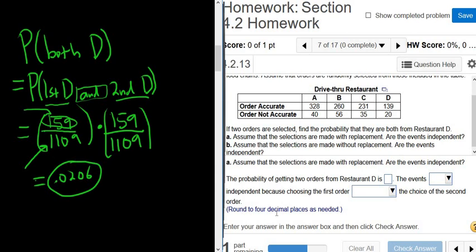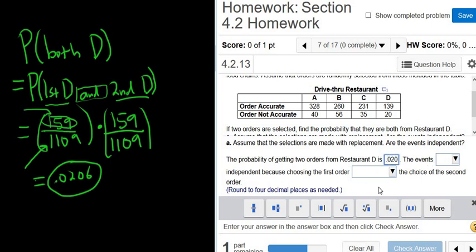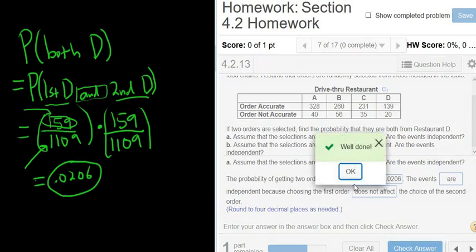All right, let's read what it wants here. Here, the probability of getting two orders from restaurant D is, okay, that's where it wants the answer. It's a little bit confusing the way it's worded sometimes. Oh, I can't hit enter yet. That's evil. You have to pick everything before you hit enter. The events, well, the probabilities, they didn't change, right? So that means the probabilities are independent. So the events are independent because choosing the first order does not affect the choice of the second order. So they really make you think about these choices here. You have to be really careful. Take your time when you're answering these follow-up questions. Let's try it. Yay. All right.